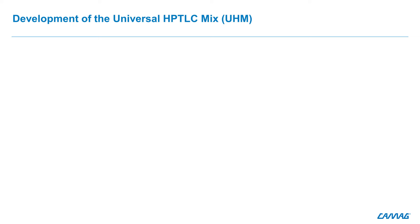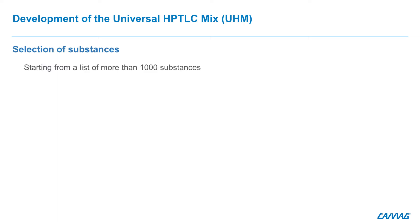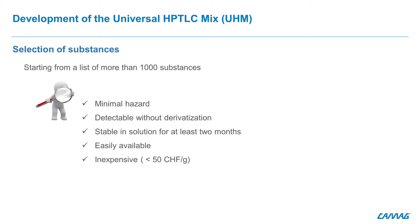For the development of the universal HPTLC mix, the project started with the selection of substances. A selection was done from a list of more than a thousand substances. Substances had to be of minimal hazard — not harmful, non-toxic to humans and unproblematic for the environment. They had to be detectable without derivatization in white light, UV 254 nm, or UV 366 nm, stable, easily available and inexpensive. From that, 24 organic substances were selected.